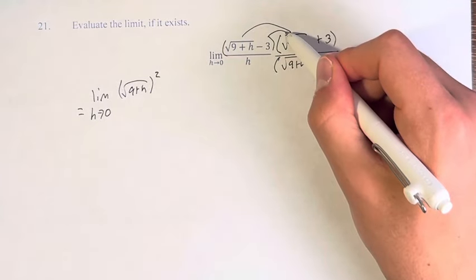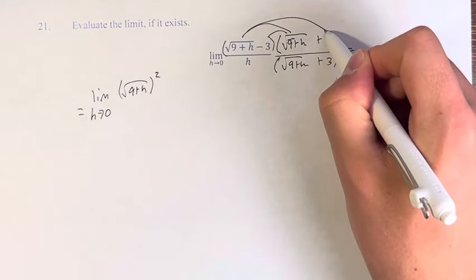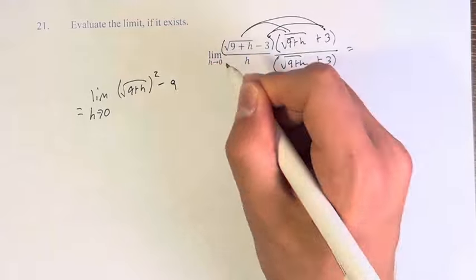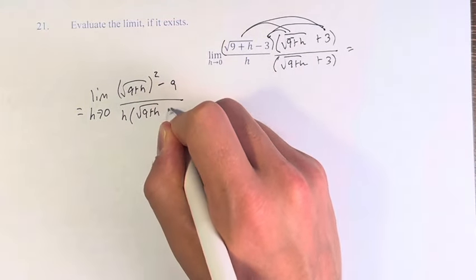Then we have negative 3 times the square root of 9 plus h, plus 3 times the square root of 9 plus h, so those cancel out. And negative 3 times 3 is minus 9. This is over h times the square root of 9 plus h plus 3.